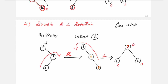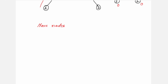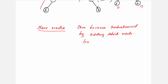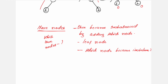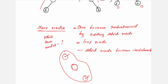Always remember: all four rotations are applied only to three nodes. The node that gets added is always a leaf node. After insertion causes imbalance, identify which node became imbalanced and select that along with the leaf node. The intermediate node connecting them forms the three nodes to which the rotation is applied.